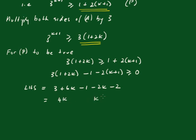Now, k is greater than or equal to 1, which means that the left hand side has got to be greater than 0. That means P is true.